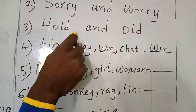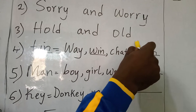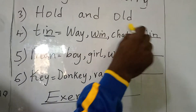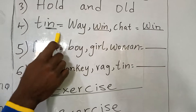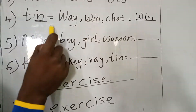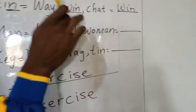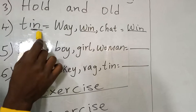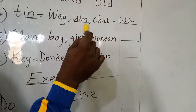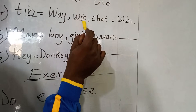Example 3: old and tin. An old man. A tin of milk. They want you to look at the words which are ending with T-I-N. We have words ending with I-N. So you underline this one and come and write it here.